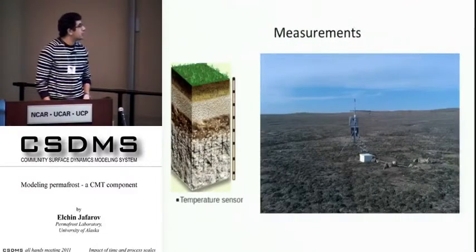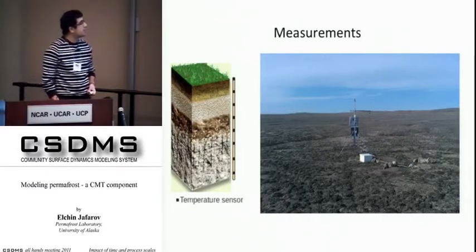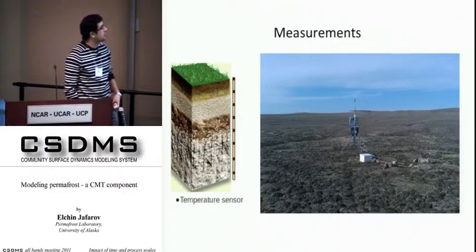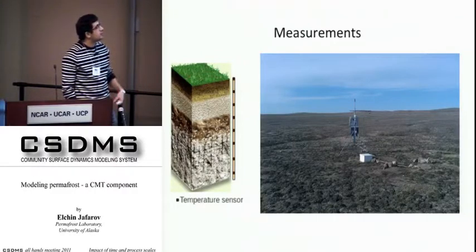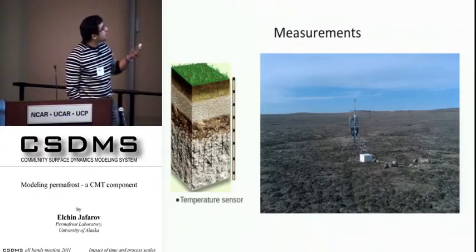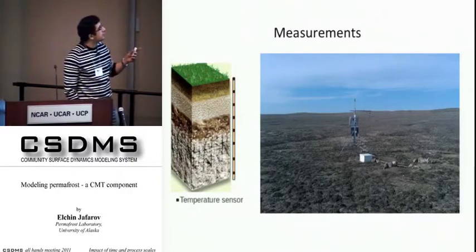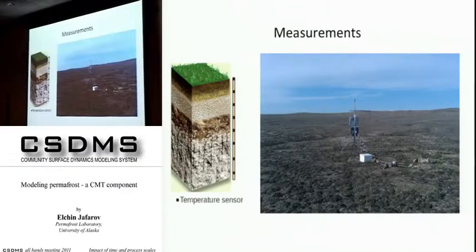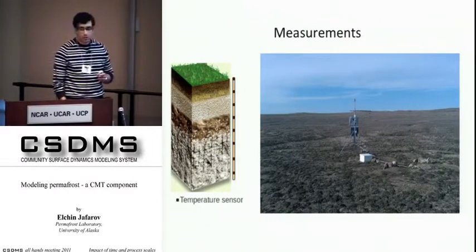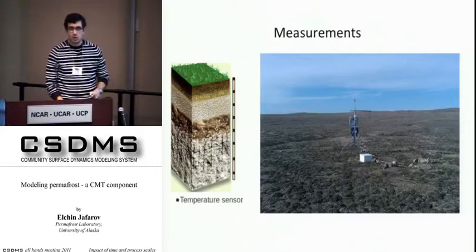How do we measure permafrost? This is the basic setup. A permafrost observation station measures air temperature, snow depth, and ground temperature. This is an example of a shallow borehole measurement station with sensors usually at every 10-centimeter depth that measure temperature on an hourly basis.